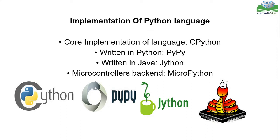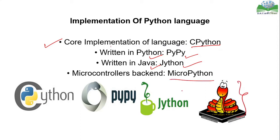Looking at the implementations of Python: the core implementation is CPython, the default Python implementation in your OS whenever you download Python from python.org. There is also PyPy, which is written in Python itself. Jython is written in Java. There is also MicroPython for microcontrollers. And for Microsoft's .NET framework, there is IronPython, which has a Python backend.